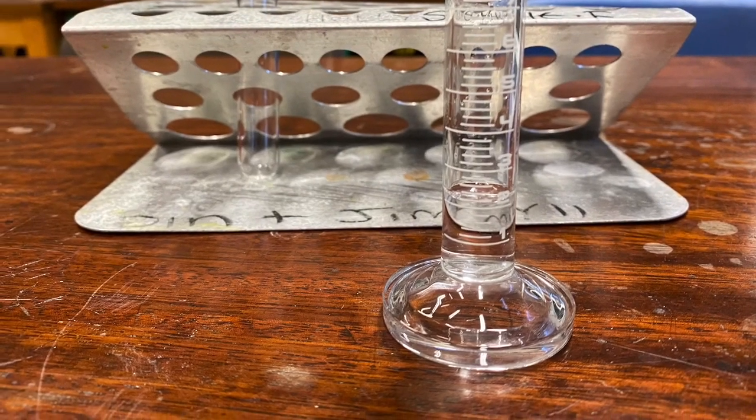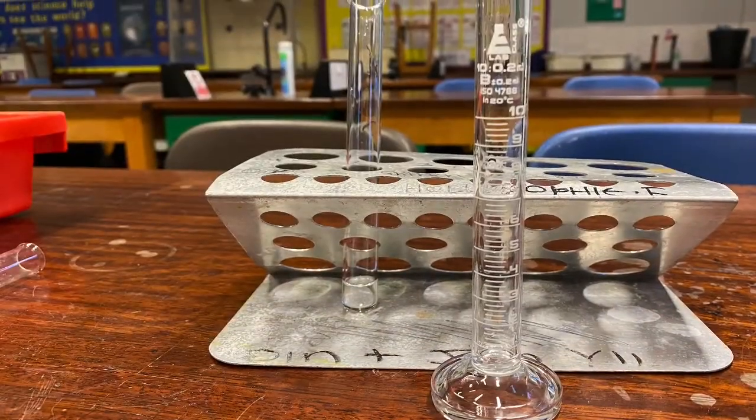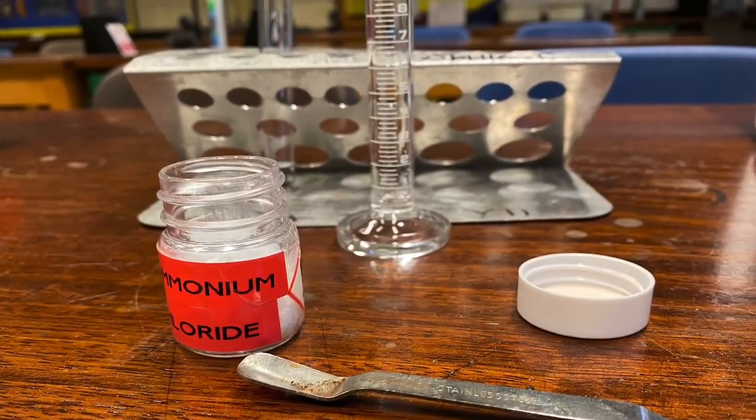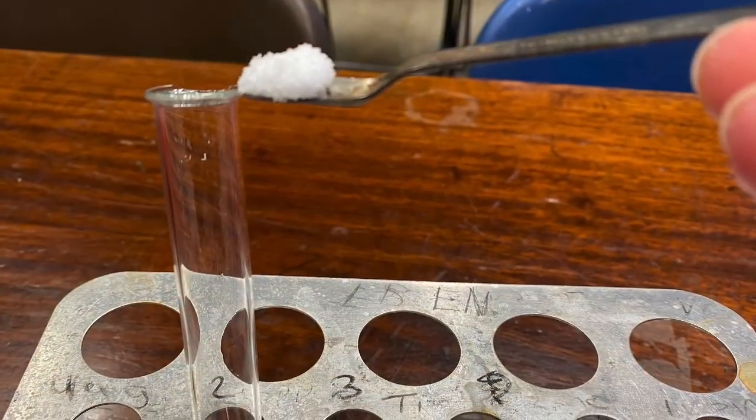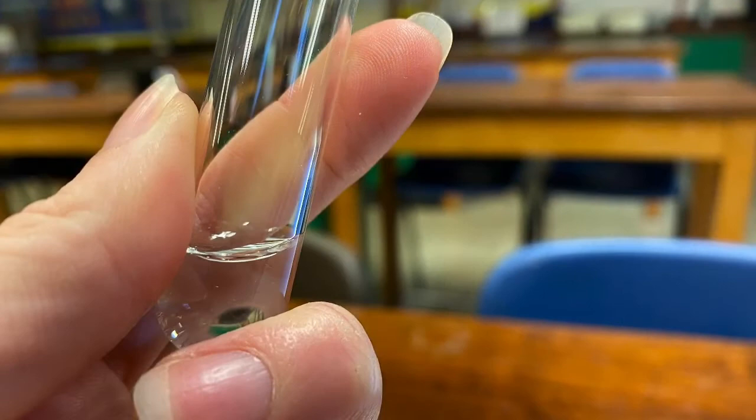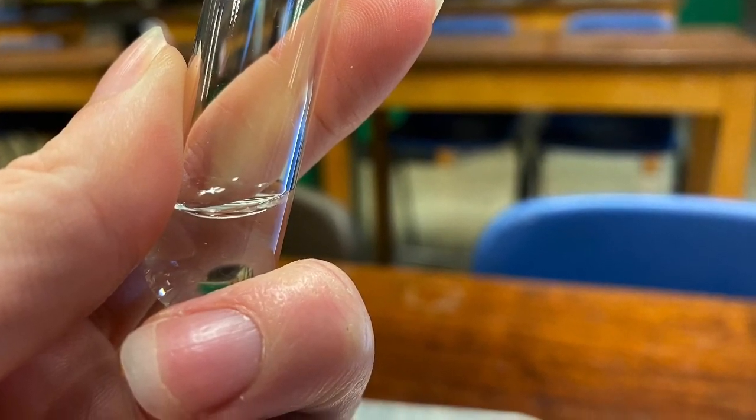For this experiment, take 2 centimeters cubed of water and add it to a test tube. Then take a spatula and some ammonium chloride and add a spatula full of ammonium chloride to the test tube. Pick up the test tube and use your hand to see what happens to the temperature of the mixture.